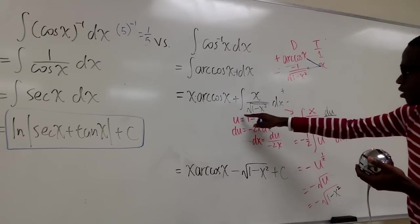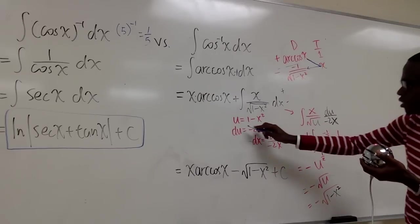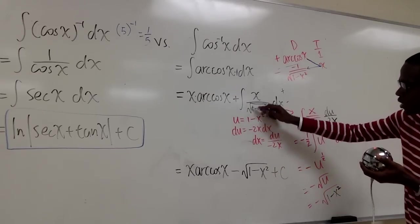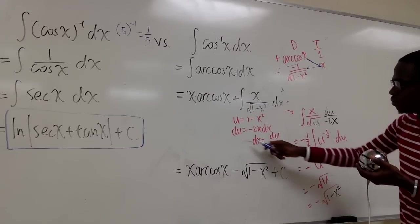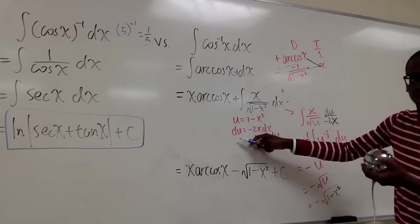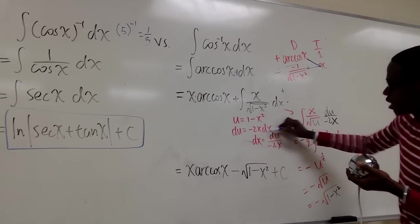So now we want to take the integral of this component. We have to use the u substitution. And we set u equal to what's inside the radical. u equals 1 minus x squared. And then we take the derivative of that, which is the du. du is going to be equal to negative 2x times dx.